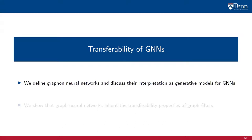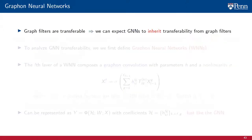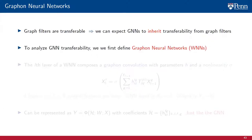In this part of the lecture, we define graphon neural networks and discuss their interpretation as generative models for graph neural networks. We then use graphon neural networks to show that GNNs inherit the transferability properties of graph filters. We have already seen that graph filters are transferable between weighted graphs associated with a given graphon. In the same way that GNNs inherit the invariance and stability properties of graph filters, we can expect them to inherit transferability. In order to study whether GNNs are transferable, we will once again turn our attention to graphons and graphon signals.